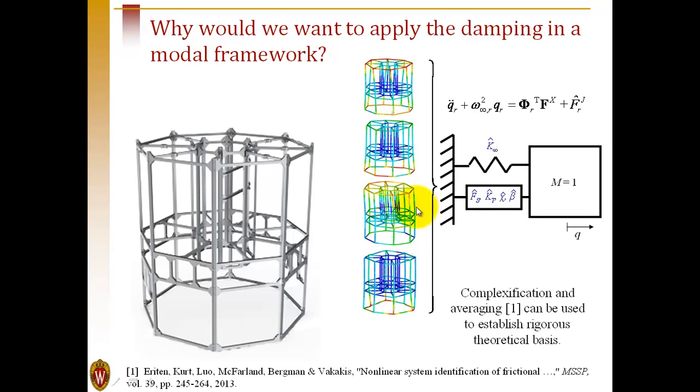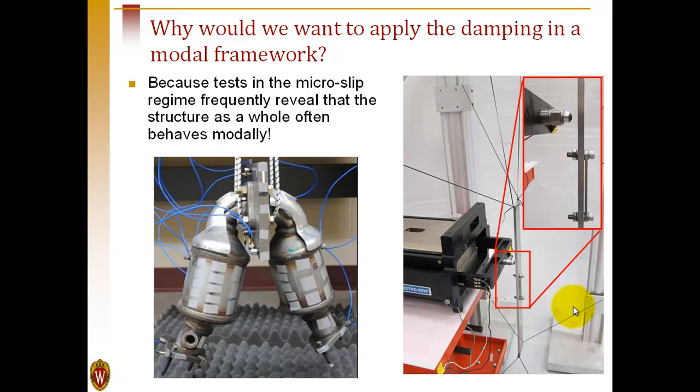If we think of taking this structure, which is nonlinear, we can apply a modal transformation, and we'd obtain a model where we have the linear modal terms, external forcing, and then the joint force from all of the discrete joints projected onto each of the modes. If we're in the micro-slip regime, this will be approximately linear, and there's some excellent theory that explains why this type of model can be well-represented as a set of uncoupled modes. We also have increasing experimental evidence that this model works in practice.